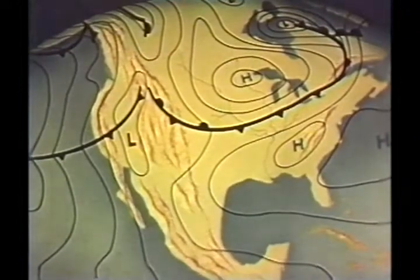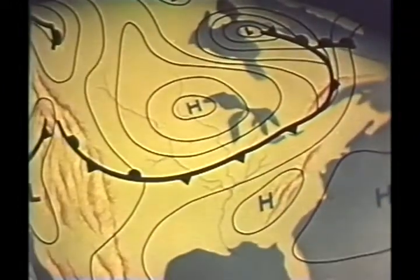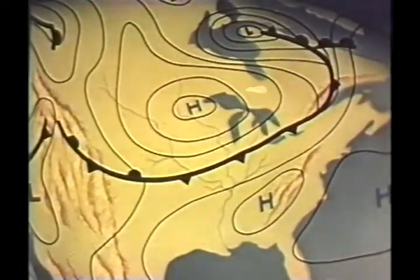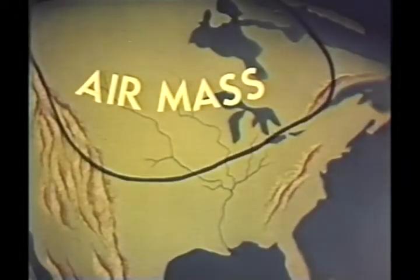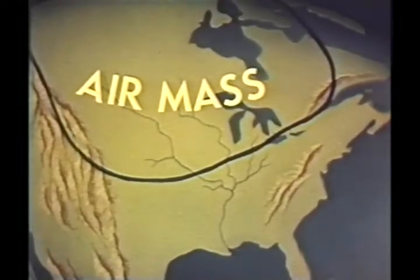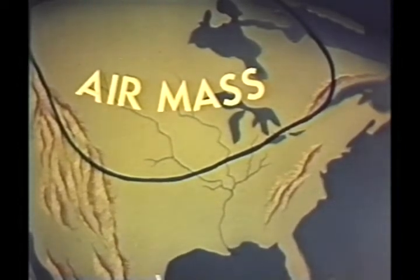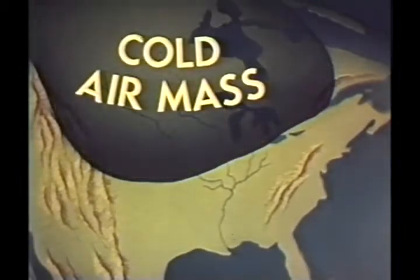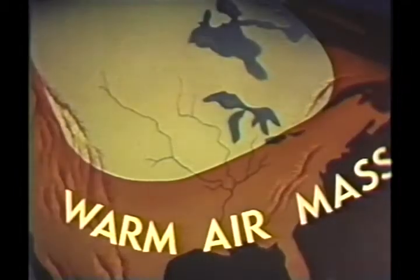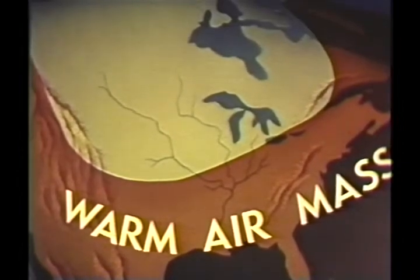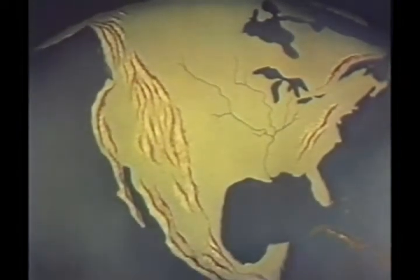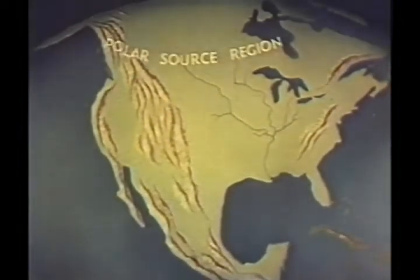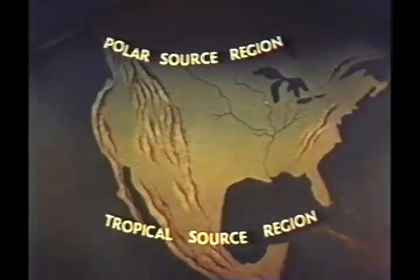Almost all weather is caused by the movement of massive bodies of air, commonly referred to as air masses. An air mass is a large body of air having relatively the same horizontal moisture content and temperature distribution. It can be cold or warm, and it can be moist or dry, depending on its source region. The two major source regions of air masses that affect flying over our continent are the polar and the tropical areas.